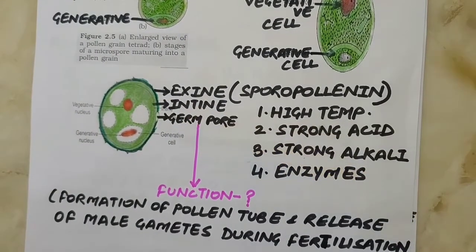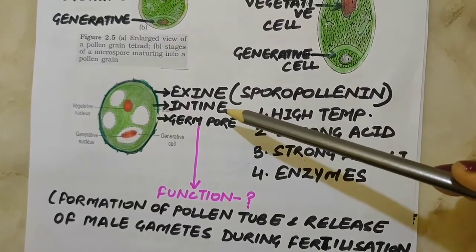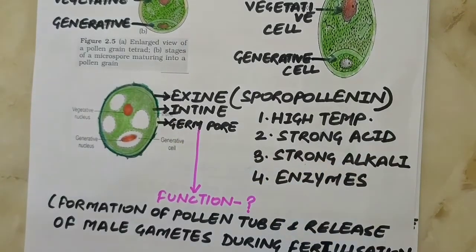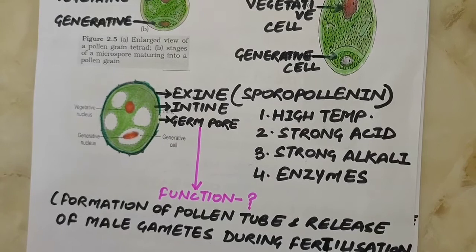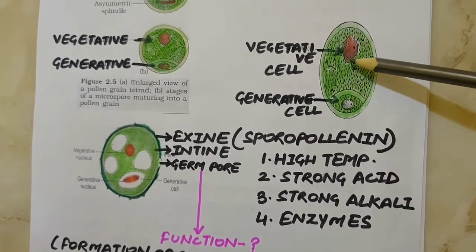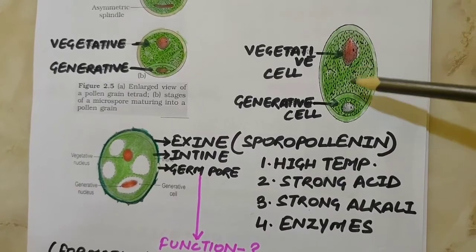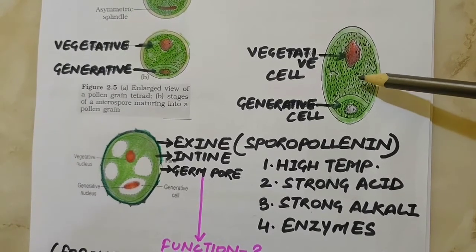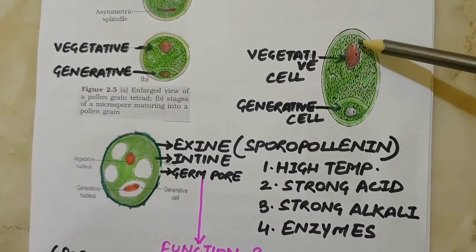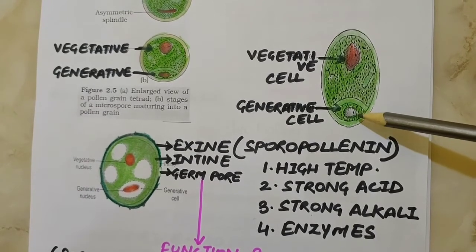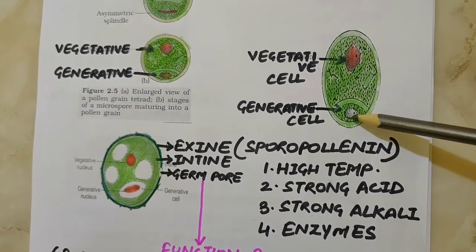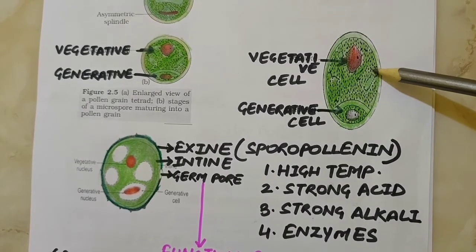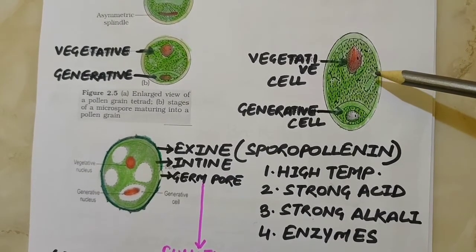The intine is a thin and continuous layer made up of cellulose and pectin. The cytoplasm of the pollen grain is surrounded by a plasma membrane. When the pollen grain is mature, it contains two cells: one is the vegetative cell and the other is the generative cell. The vegetative cell is bigger, has food reserves and a large irregularly shaped nucleus. The generative cell is small and floats in the cytoplasm of the vegetative cell — it is spindle-shaped with dense cytoplasm and a nucleus. The vegetative cell produces an elongated pollen tube and delivers the male gamete to the embryo sac.